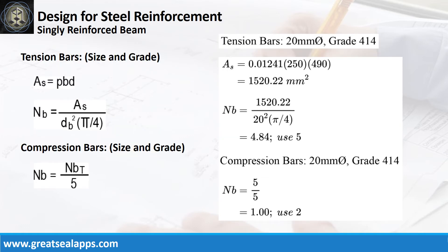Given ρ equals 0.01241, b equals 250 mm, and d equals 490 mm, the area of steel for tension bars is 1,520.22 square millimeters. The number of bars for 20 mm bar is 5, and the number of compression bars is 2.